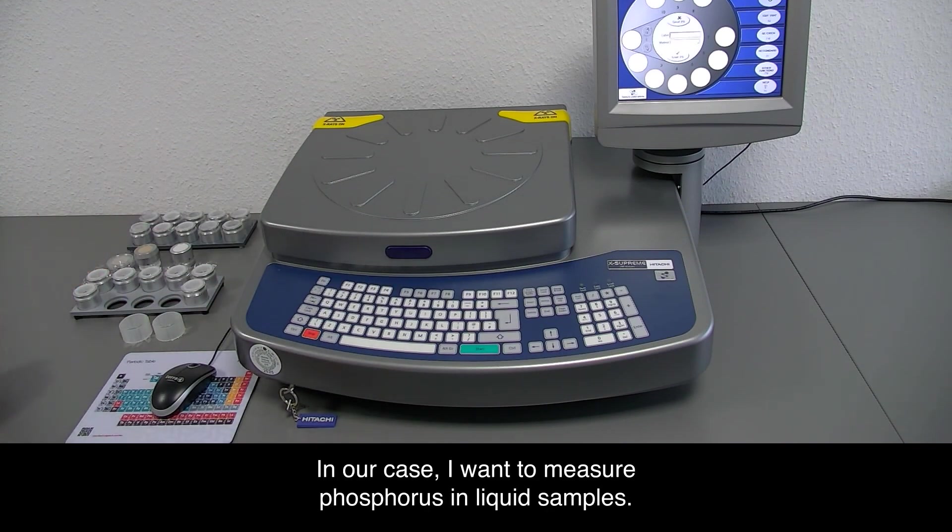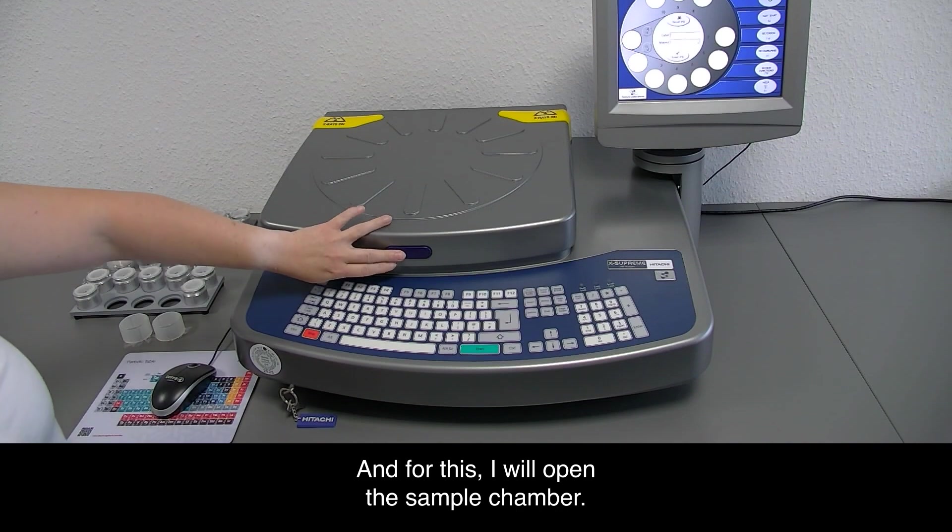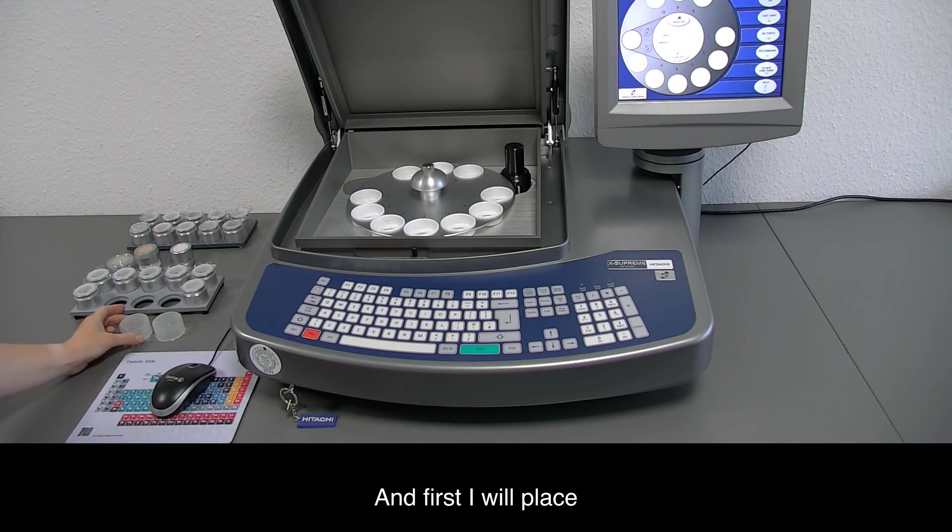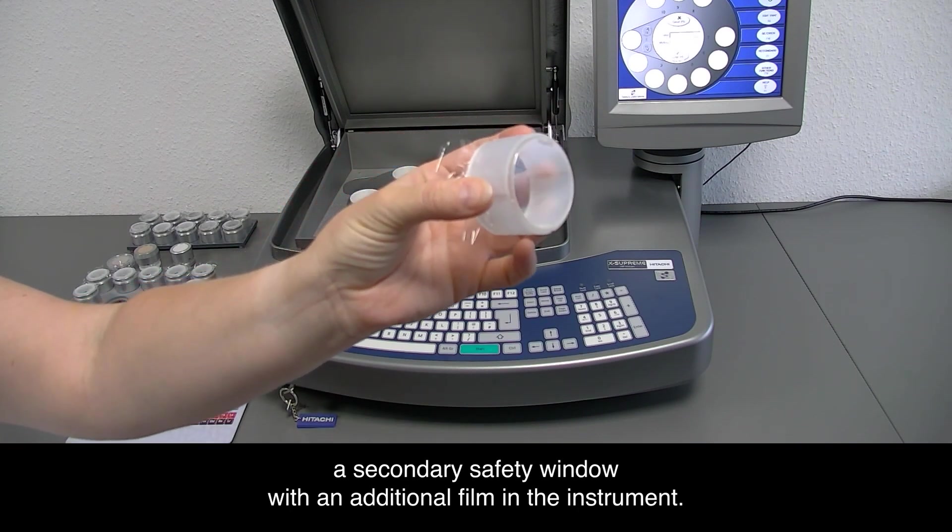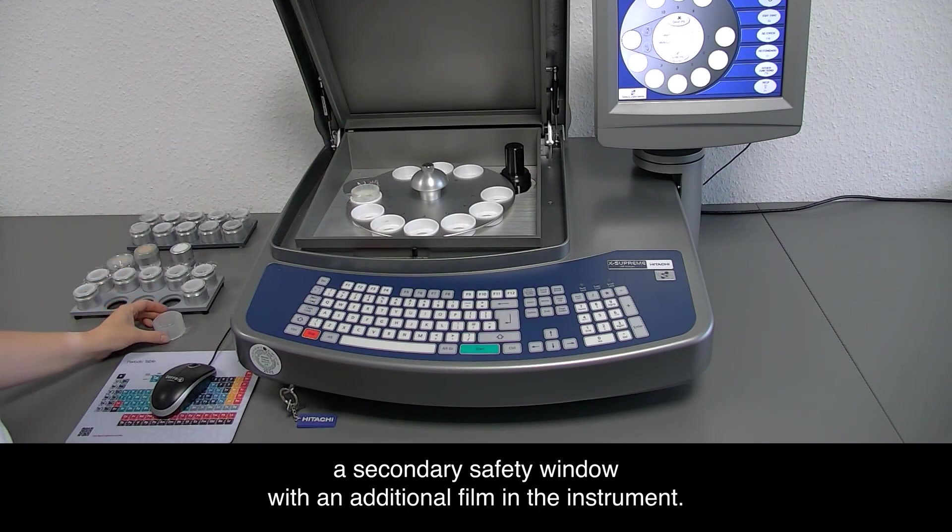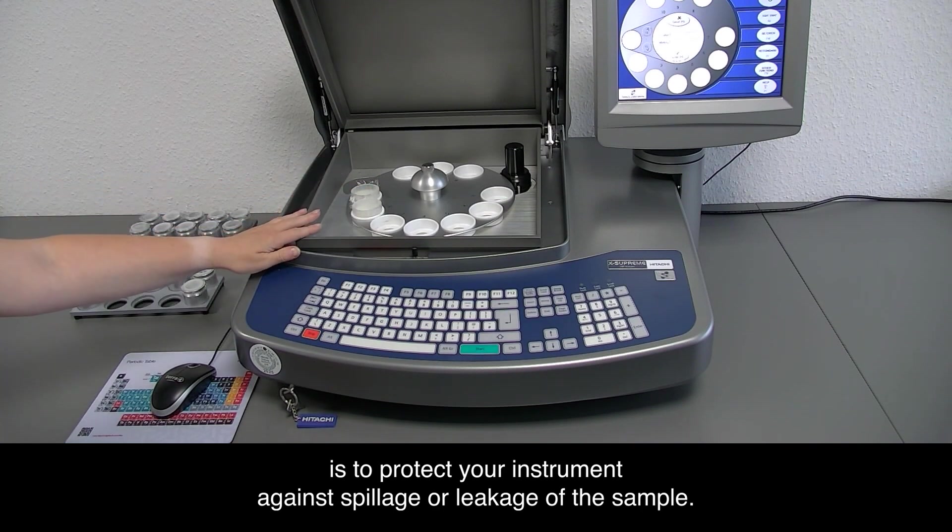In our case, I want to measure phosphorus in liquid samples. For this, I will open the sample chamber and first place a secondary safety window with an additional film in the instrument. This secondary safety window is to protect your instrument against spillage or leakage of the sample.